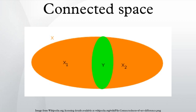A Euclidean plane with a straight line removed is not connected since it consists of two half-planes. The space of real numbers ℝ with the usual topology is connected. If even a single point is removed, the remainder is disconnected. However, if even a countably infinite set of points is removed from ℝⁿ where n ≥ 2, the remainder is connected. Any topological vector space over a connected field is connected. Every discrete topological space with at least two elements is disconnected — in fact, such a space is totally disconnected.